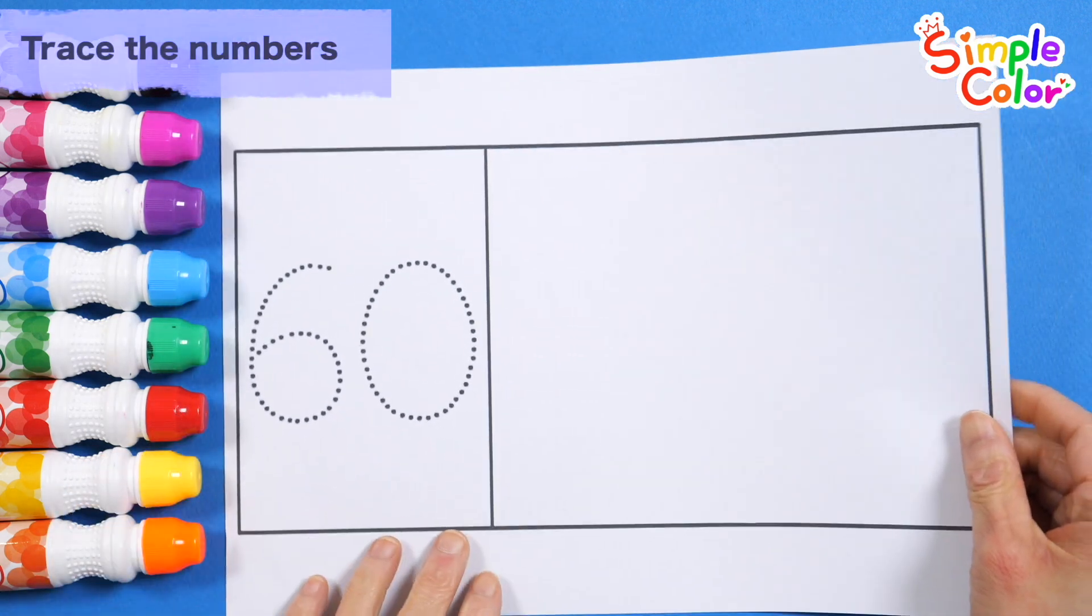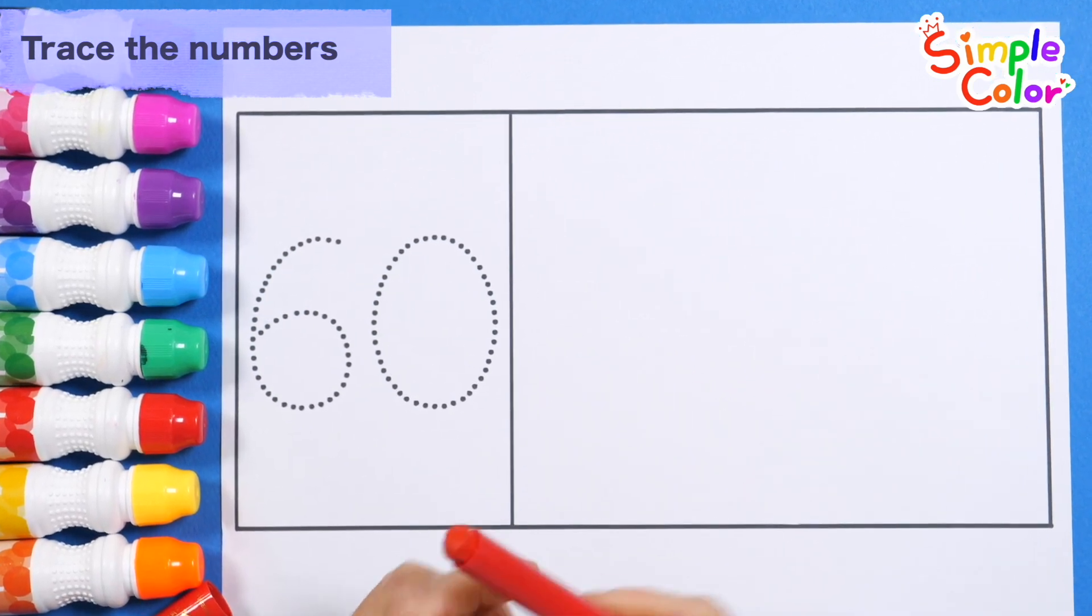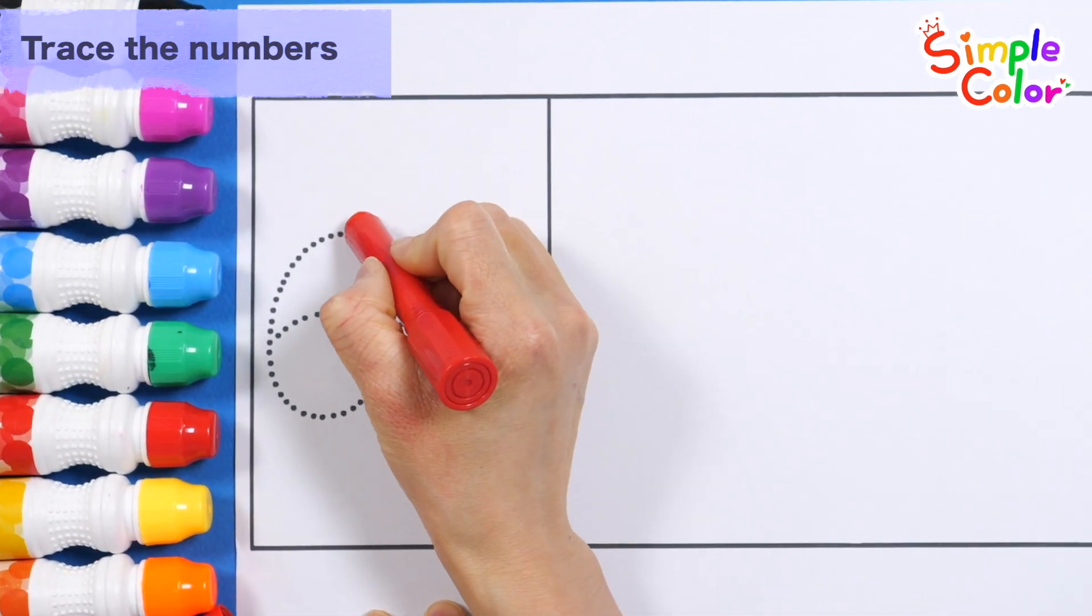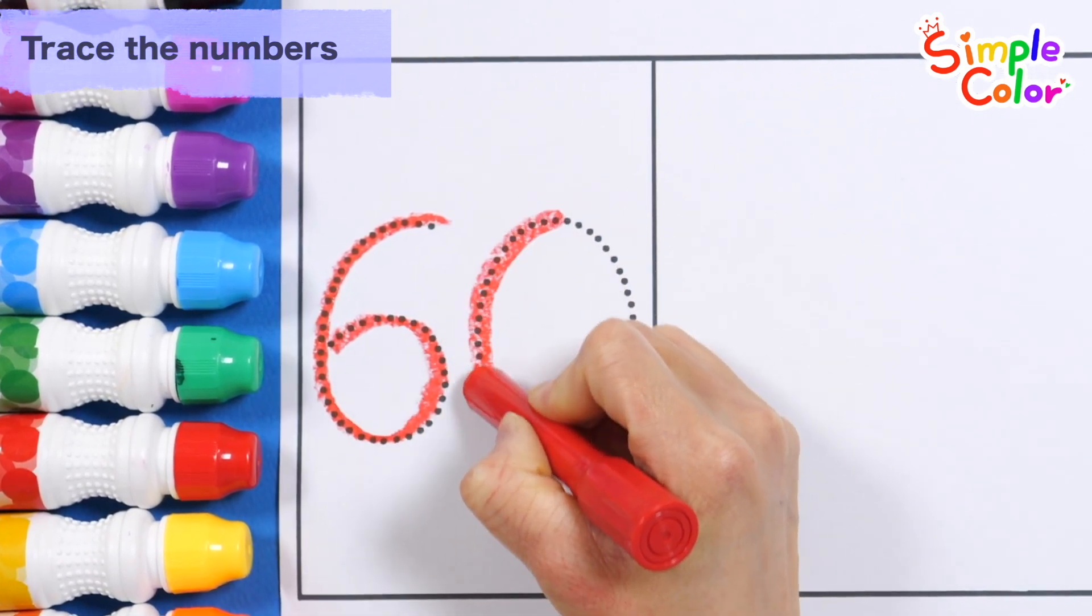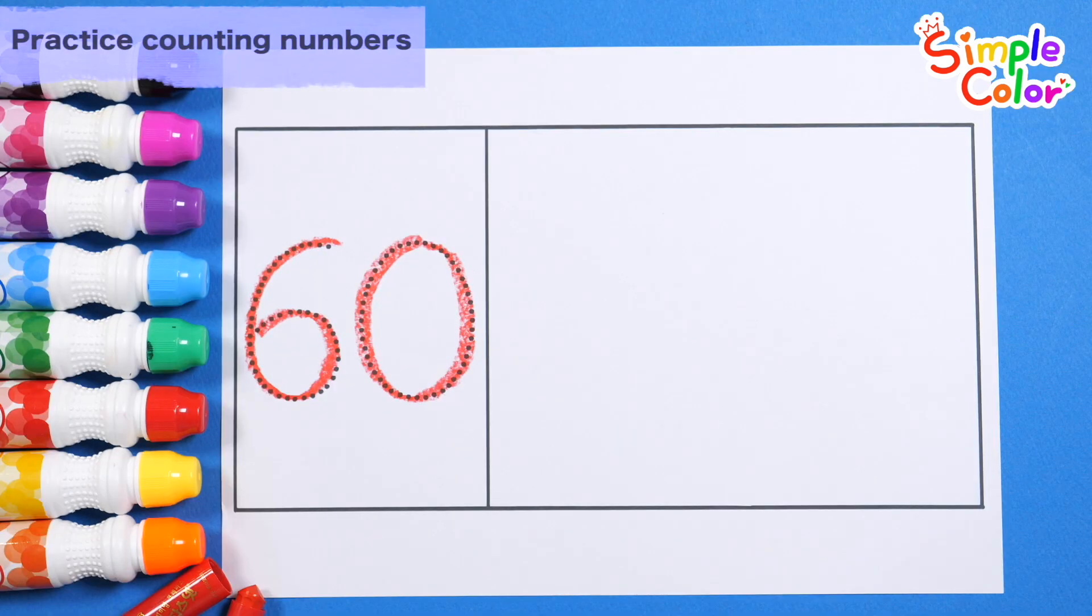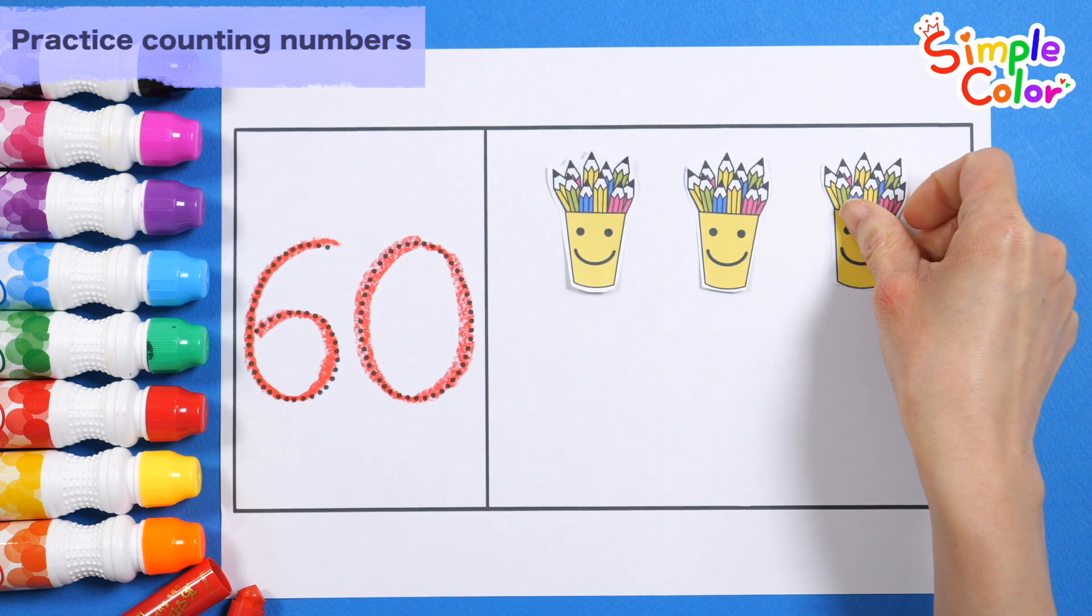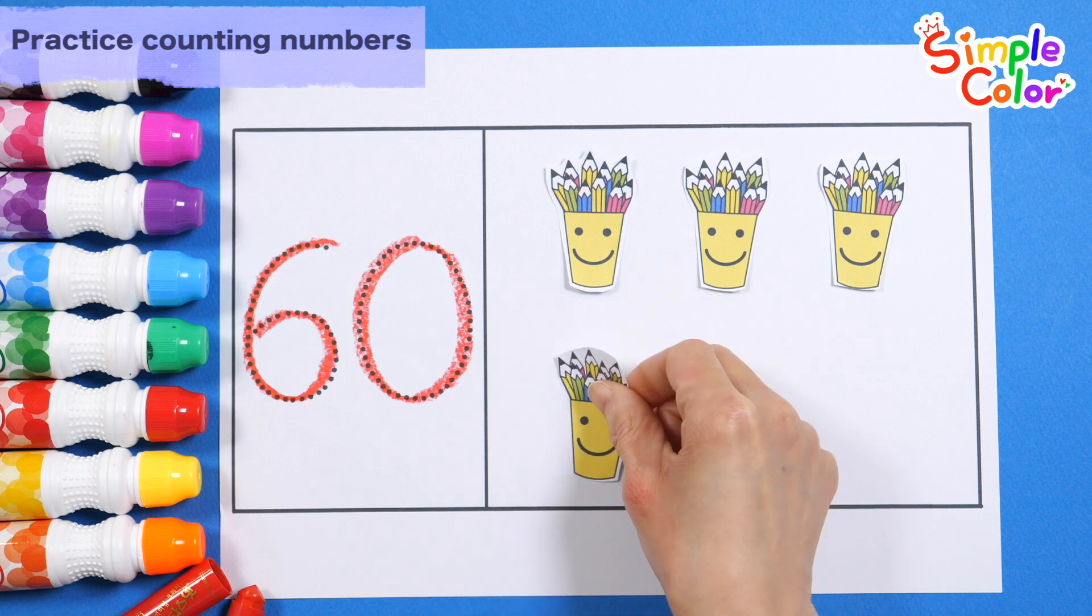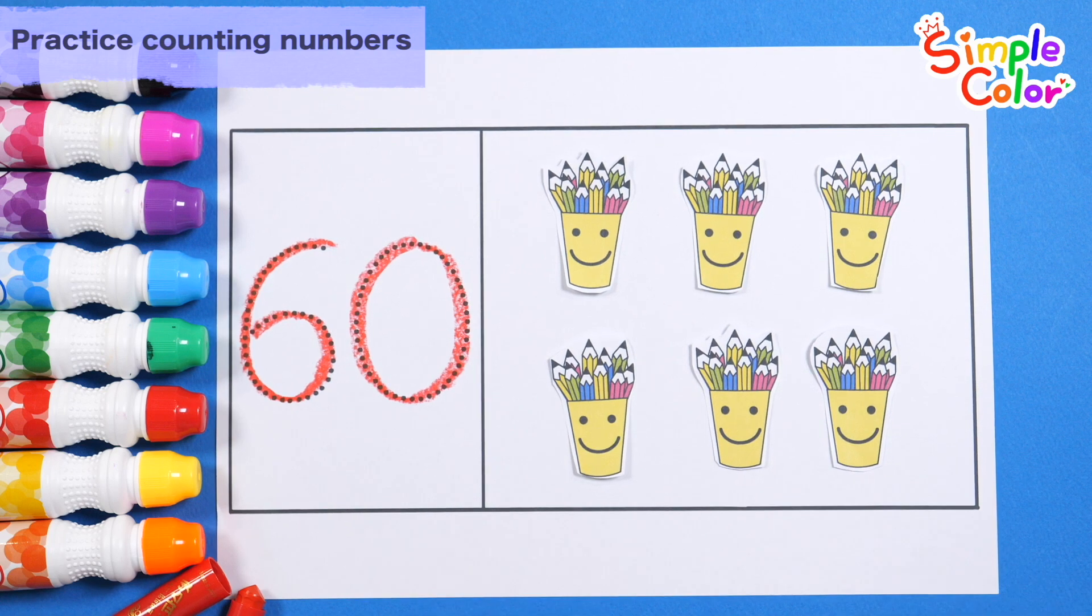Let's write the numbers along the dotted lines. 60. Shall we place the pictures according to the number? 10, 20, 30, 40, 50, 60. 60 pencils. Great job!